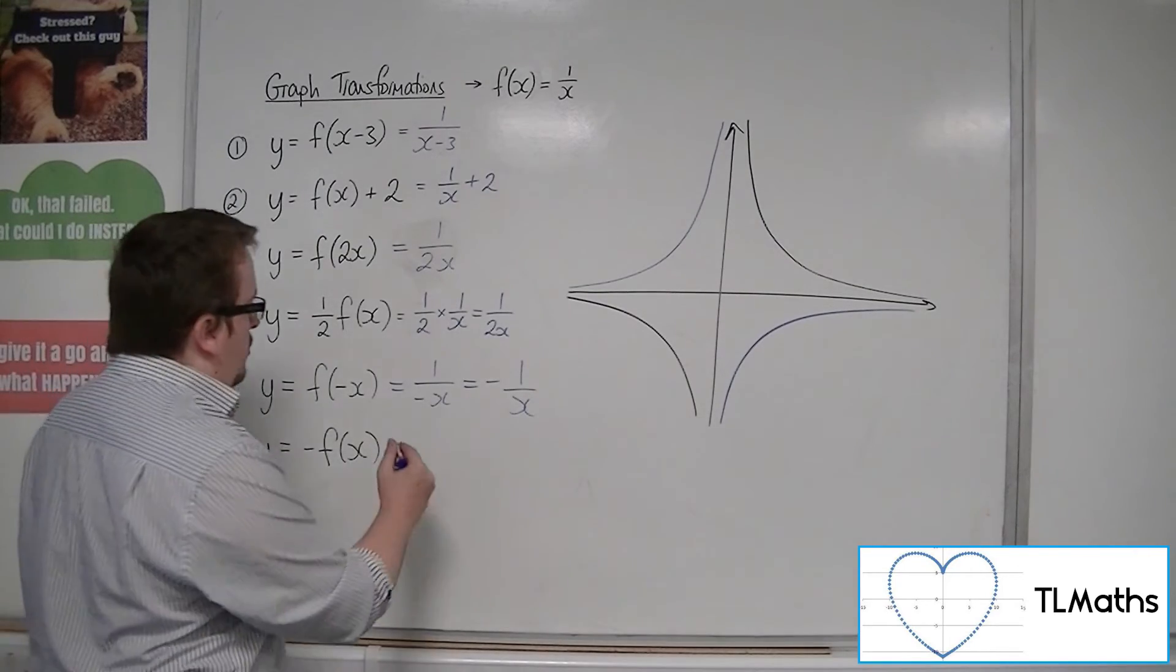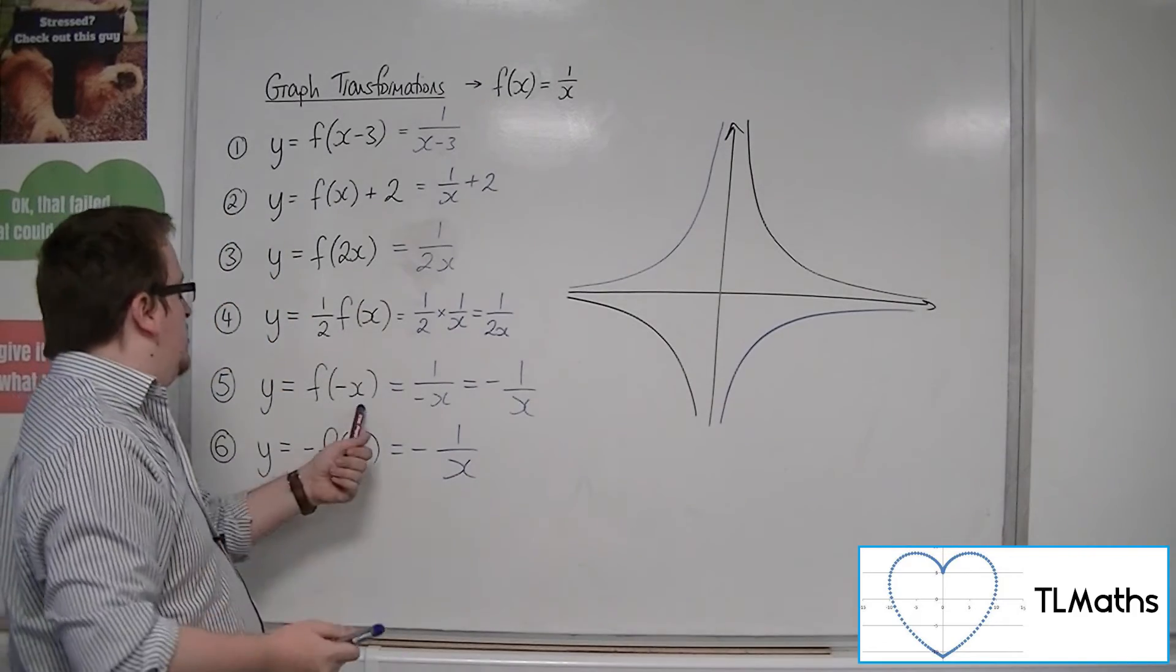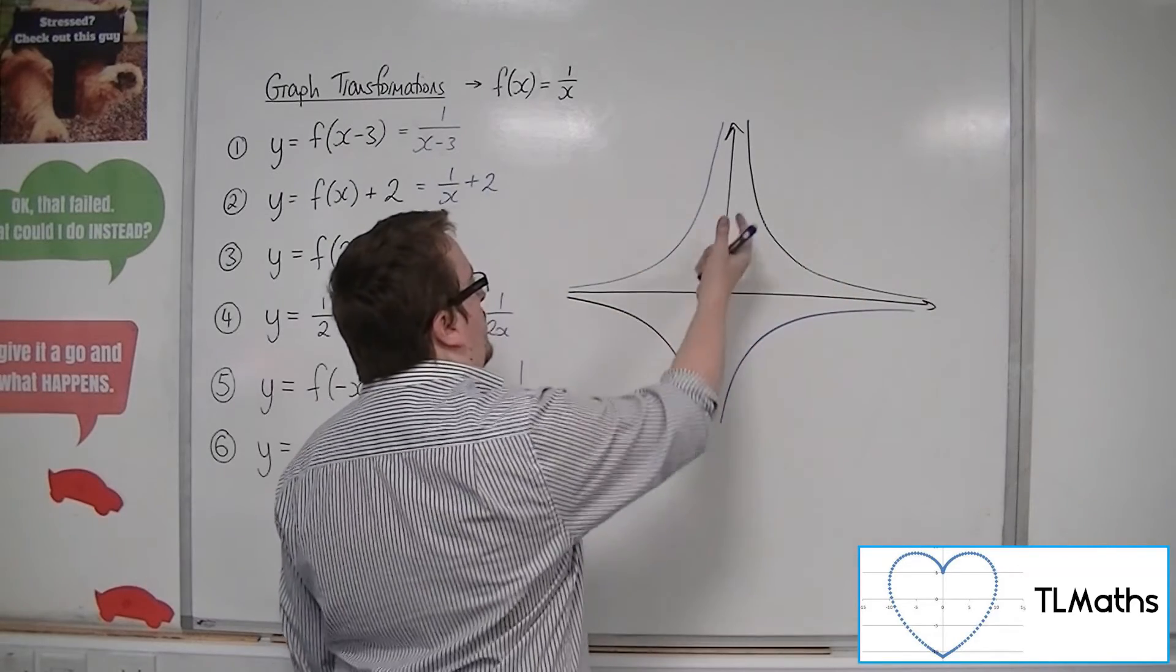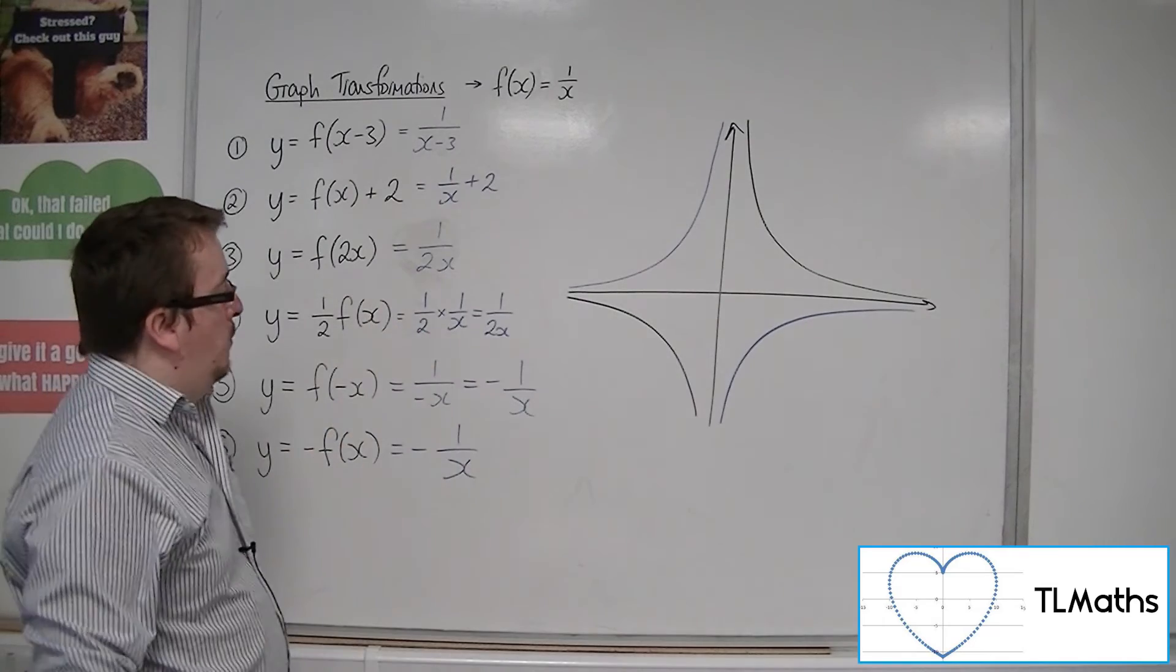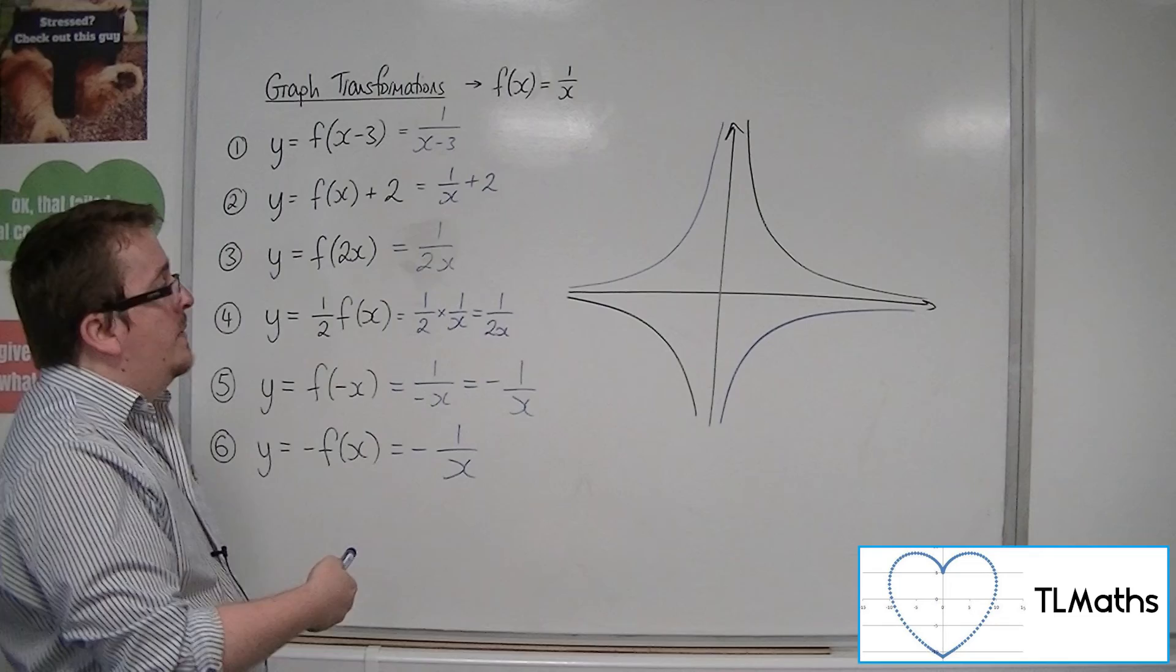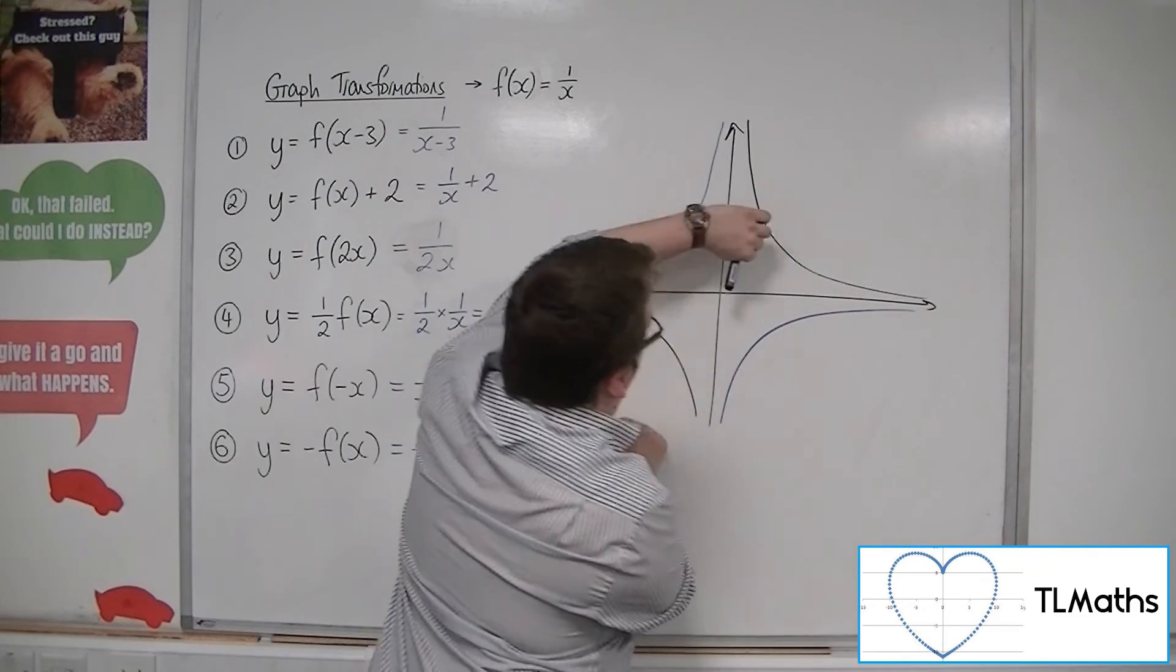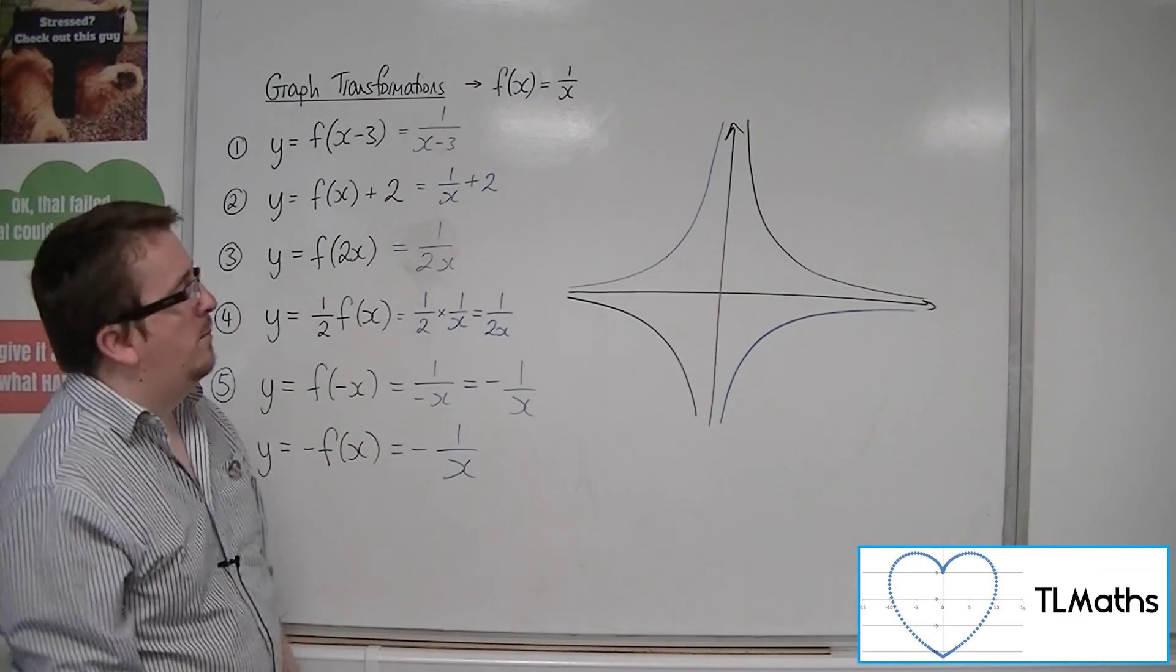Now, as for minus f of x, that's just putting a minus in front of f of x, so minus 1 over x again. So, these two are the same, because reflecting in the x-axis will be resulting in the same curve as reflecting in the y-axis. So, this is another case of a curve that is an odd function. It is a rotation of itself about the origin by 180 degrees. So, that is how we can transform 1 over x.